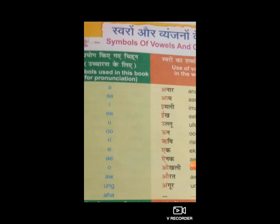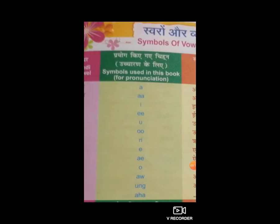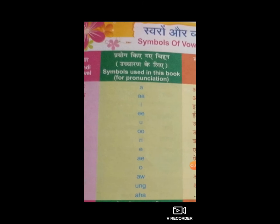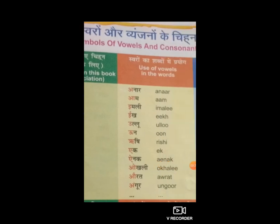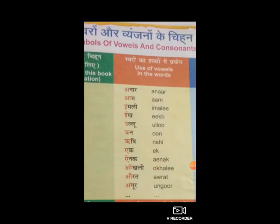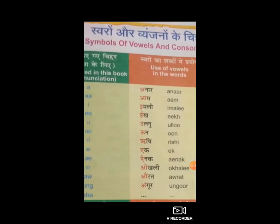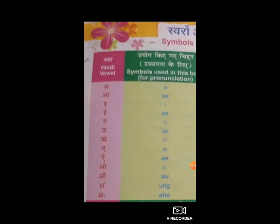अब बनेगा 'अं'। क्या बनेगा? अं - यानि UNG। अं से बनेगा अंगूर। अंगूर का English word, यानि use of vowels in the word अंगूर: U, N, G, double R। अंगूर।